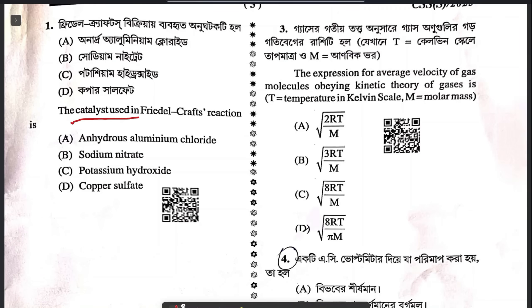The first question is about the catalyst used in the Friedel-Crafts reaction. It is a very simple question. The Friedel-Crafts reaction uses aluminum chloride. So the answer is anhydrous aluminum chloride.